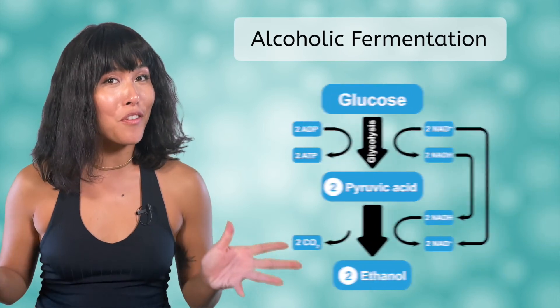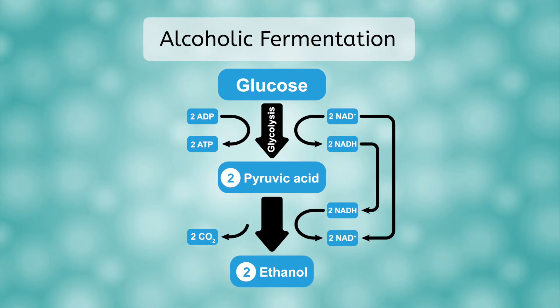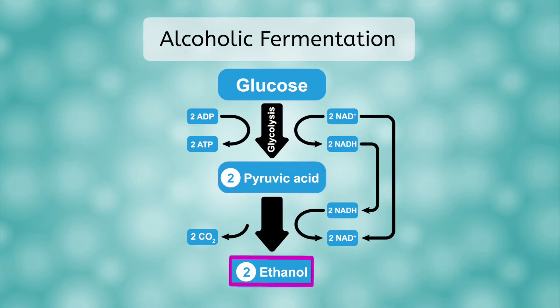Lactic acid fermentation is not the only type of fermentation in the living world. Some cells perform a different process called alcoholic fermentation in the absence of oxygen. Like lactic acid fermentation, alcoholic fermentation begins with glycolysis, which produces two ATP. And once again, NADH needs somewhere to donate its electrons so it can be recycled as NAD+. In this case, the electrons are used as two pyruvate molecules react to form two molecules of ethanol, a type of alcohol. Two carbon dioxide molecules are also released in the process.